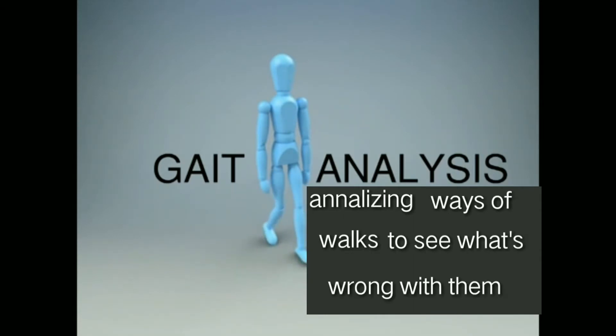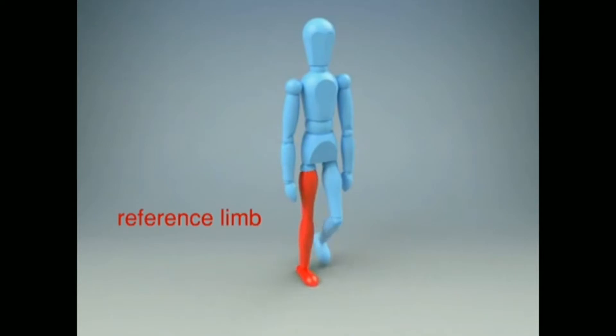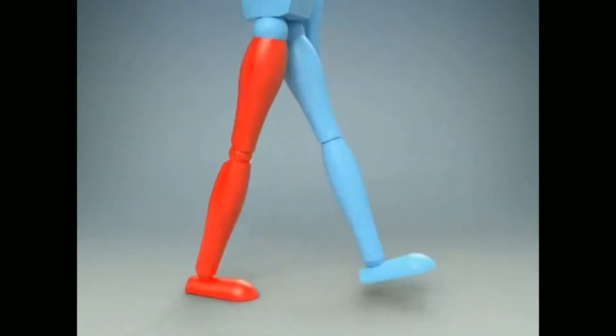To make gait analysis easy, we only look at one leg at any given time. We call this the reference limb, which we've colored here in red. Instead of steps or seconds, we measure time in terms of the gait cycle.